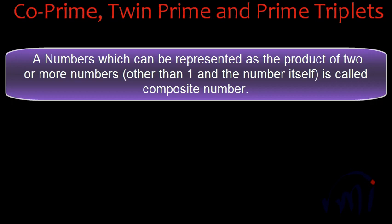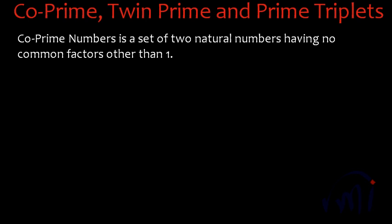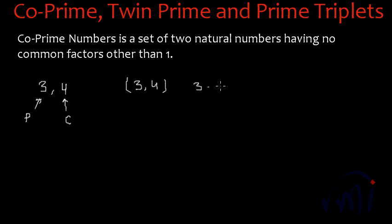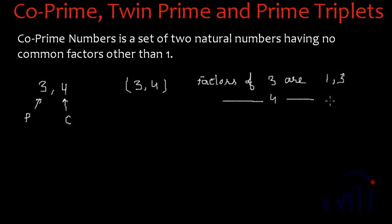So what is a co-prime number? Co-prime numbers is actually a set of two natural numbers having no common factors other than 1. So any two numbers like 3 and 4 — 3 is a prime number but 4 is actually a composite number. But together, 3 and 4 don't have any common factor. The factors of 3 are 1 and 3, and the factors of 4 are 1, 2, and 4. They have only one common factor, which is 1, so 3 and 4 are called co-prime numbers.